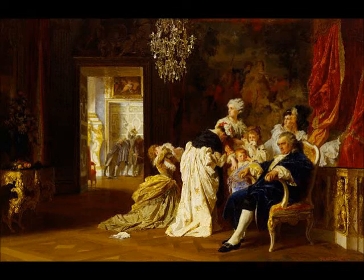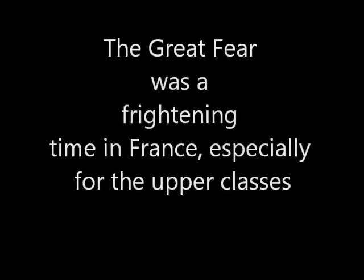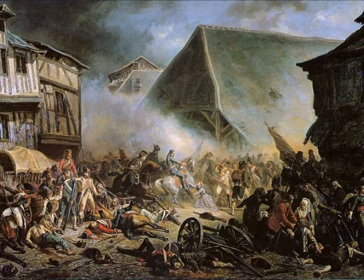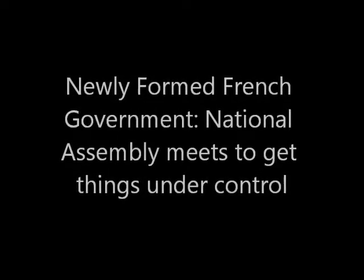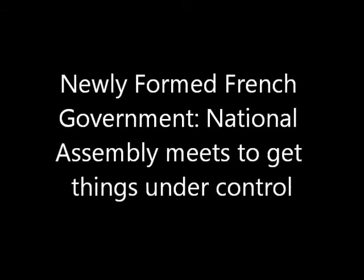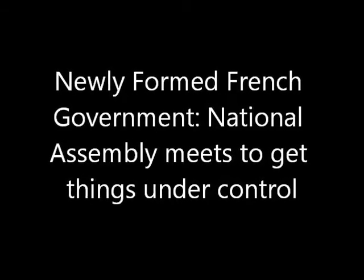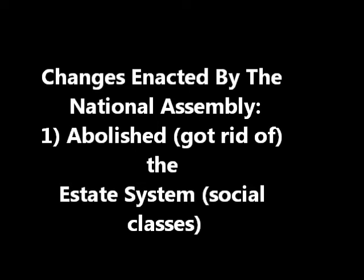The Great Fear was a scary time in France — peasants were going around killing members of the first and second estates or anyone perceived as rich. It started to get pretty out of control, indicative of any place that has gone through a revolution. The members of the newly formed National Assembly held an emergency meeting to get things under control, and the National Assembly enacted many changes. First, they abolished the estate system, making everyone equal in society.